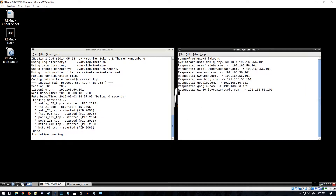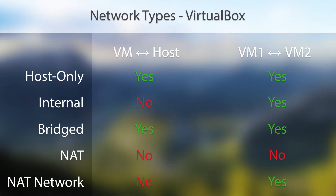So what we're going to have to do is change the setting to a different thing, and I'll put up a chart on screen now for you. As you can see, it compares all the different network types in VirtualBox. The two that we're looking at are the first two: host-only and internal. If we look at VM to host, you can see that the host and VM can communicate back and forth on host-only, and it can also communicate with the other VMs. Right below that, we have internal, which can communicate with the other VMs but not the host. That's what we're going to switch to.